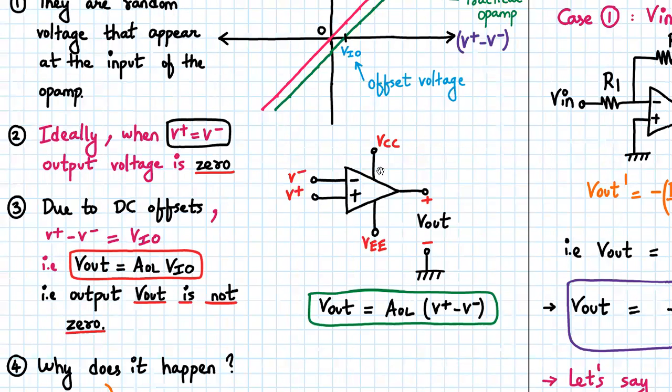DC offset refers to random voltages that appear at the input of an op-amp. Now let's consider this scenario where you have an op-amp. It is powered with +VCC and -VEE, has an output, and we apply the input to the two pins, V- and V+, that is inverting and non-inverting terminals.